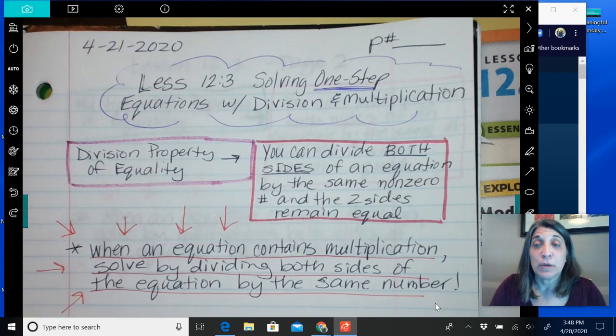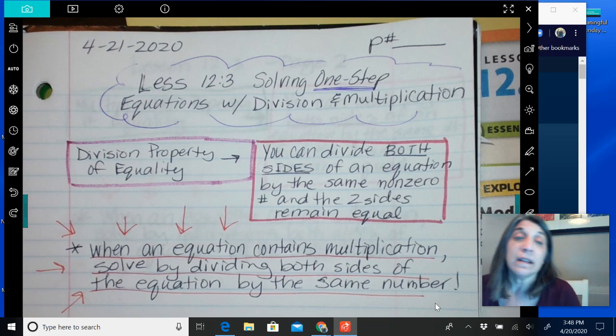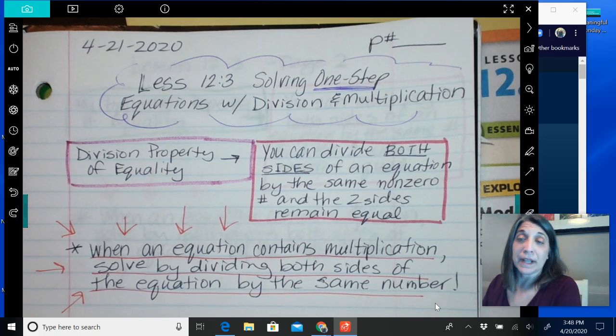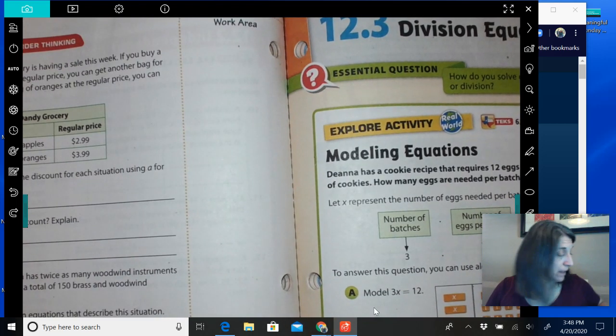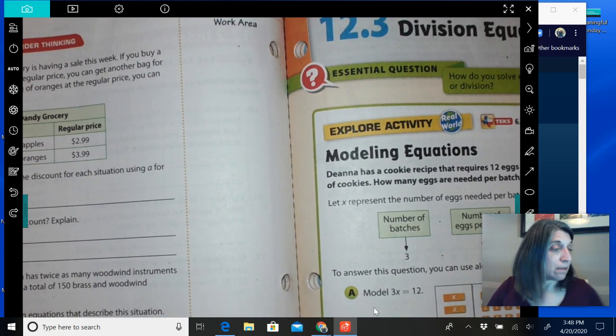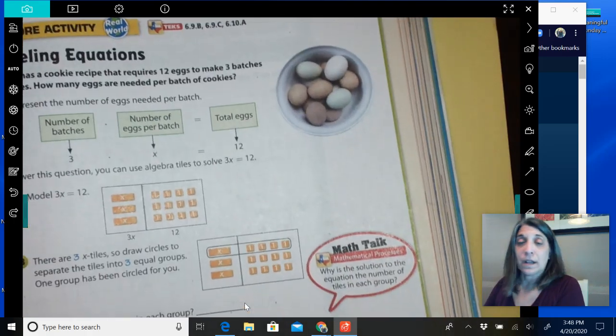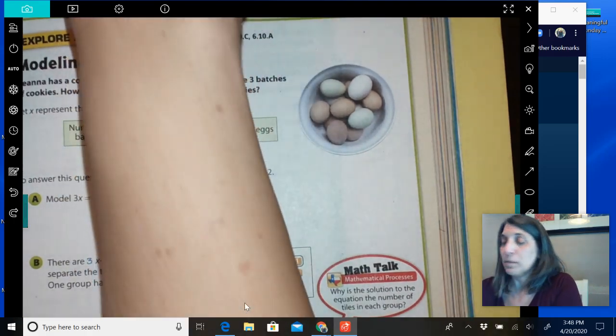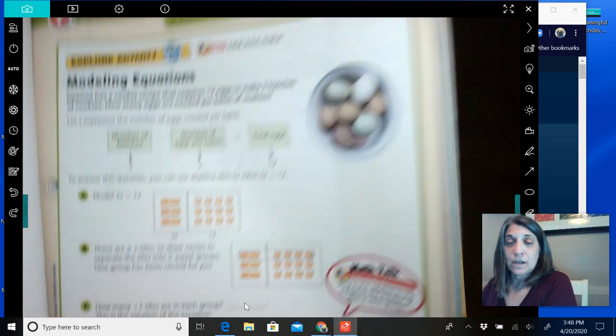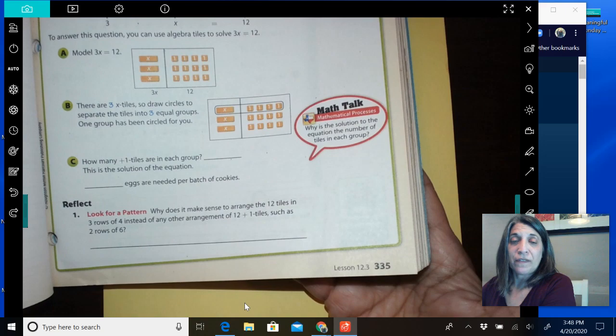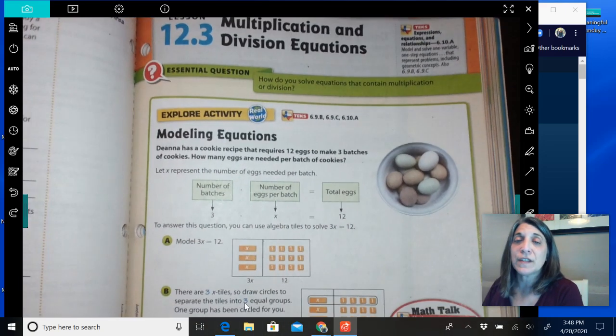Okay guys, y'all ready to learn some new stuff? We are going to get into lesson module 12, lesson 3, which if you look in your book, that begins on page 335. So 335 is multiplication and division equations.